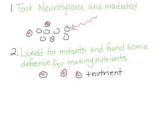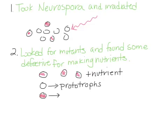I want to introduce a couple of terms. When a Neurospora cell is able to synthesize all of its nutrients from inorganic materials supplied in the food, we call these cells prototrophs. That's also true for Saccharomyces cerevisiae cells — if they can make all their nutrients from inorganic materials, they're prototrophs. If you have a cell that is defective for making a particular nutrient and you have to supply that nutrient in their food, we call them an auxotroph.